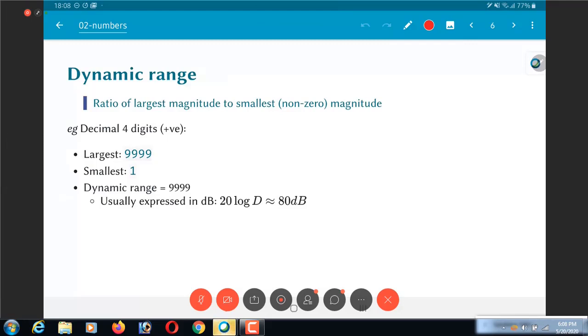So dynamic range. If I restrict myself to 4 decimal digits, what I have is the largest possible value that I can represent is 9999. Remember this is decimal. And the smallest is 0001, okay, 1 in other words, which means that the dynamic range is 9999 divided by 1 equal to 9999.